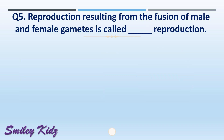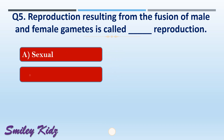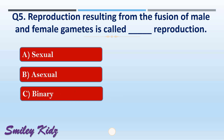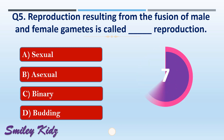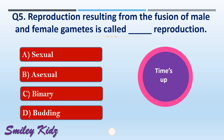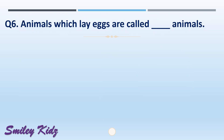Question number five: the production resulting from the fusion of male and female gametes is called dash reproduction. The options are: A) sexual, B) asexual, C) binary, or D) budding. The right answer is option A, sexual. Reproduction resulting from the fusion of male and female gametes is called sexual reproduction.